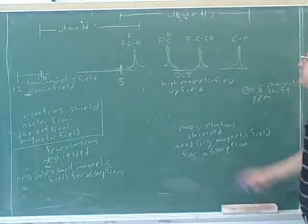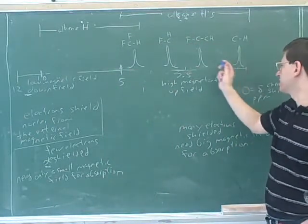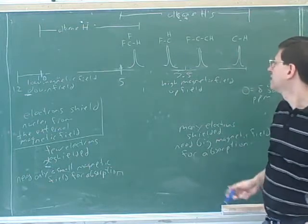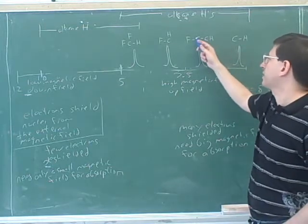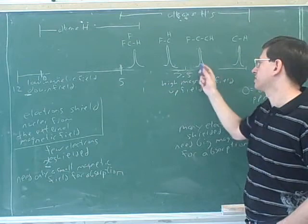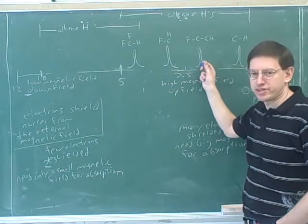So again, it's kind of a summary here. This doesn't have anything electronegative around it, so it's pretty far to the right. Now, this is attached to a carbon with something electronegative, so it's still to the right of 2.5, but it's further to the left than before.